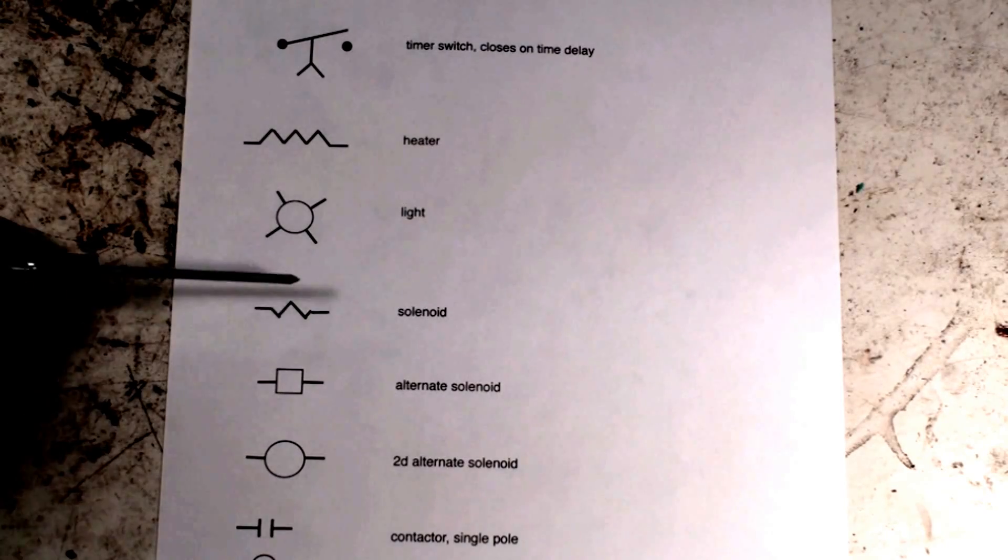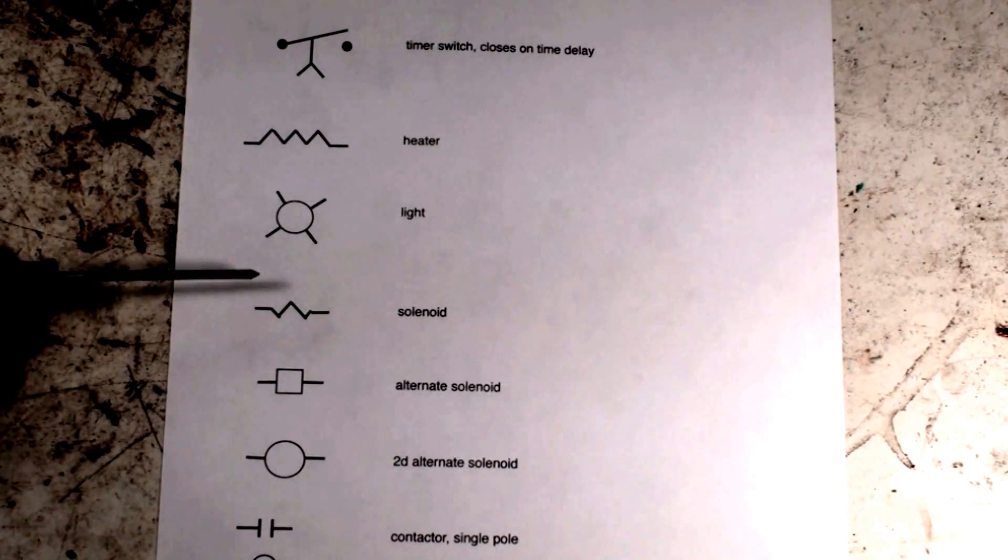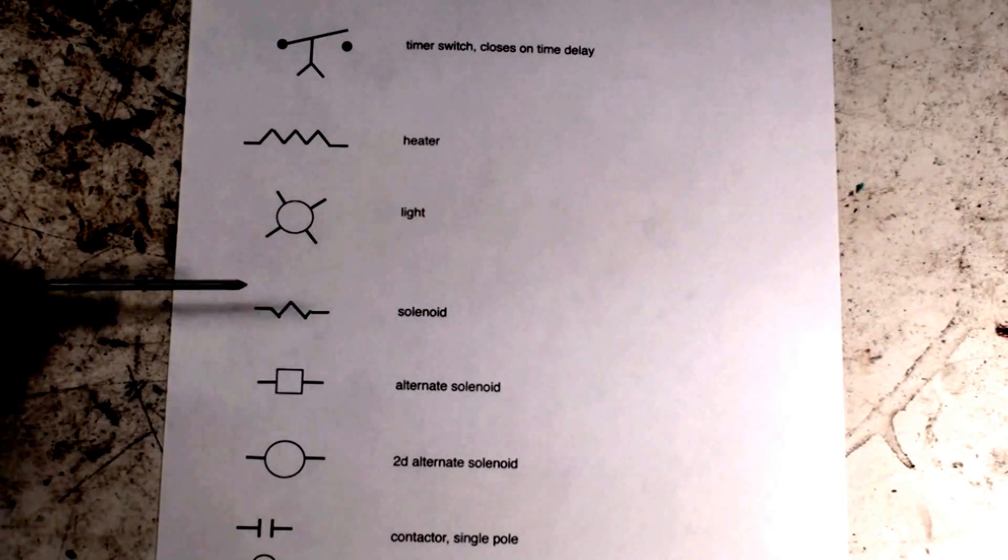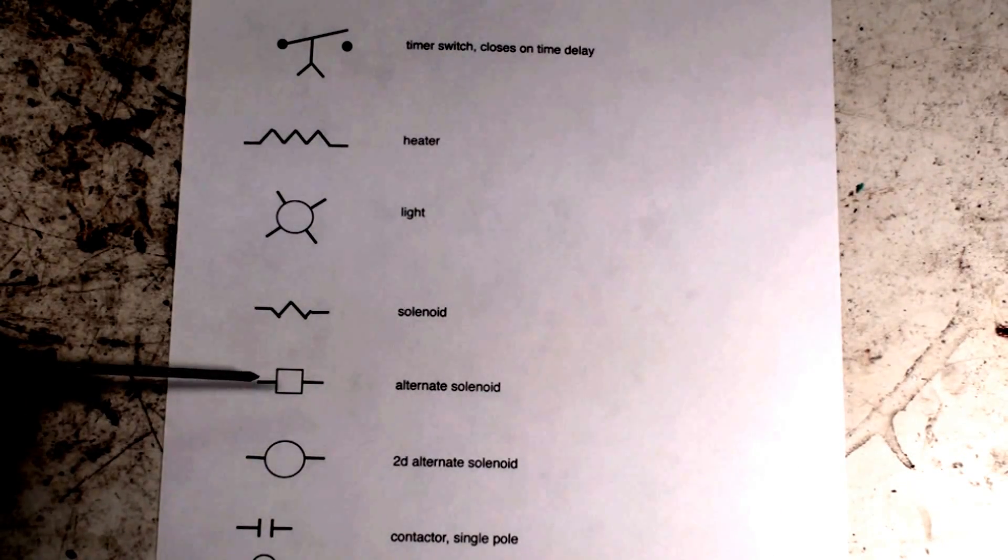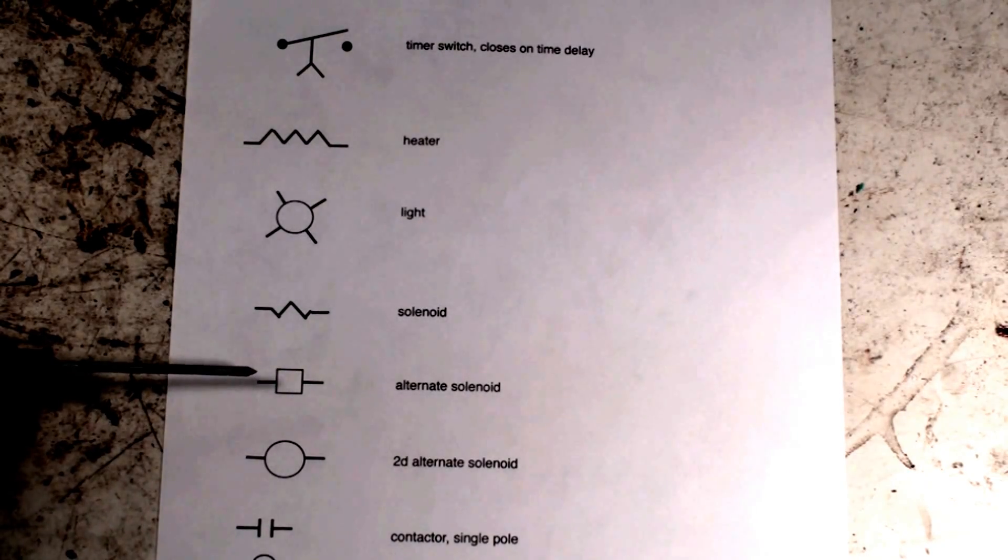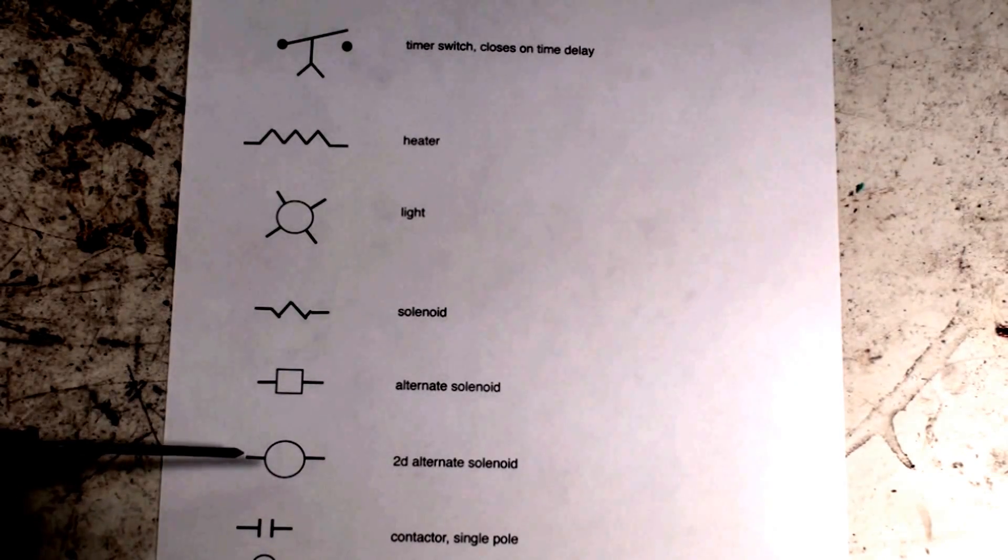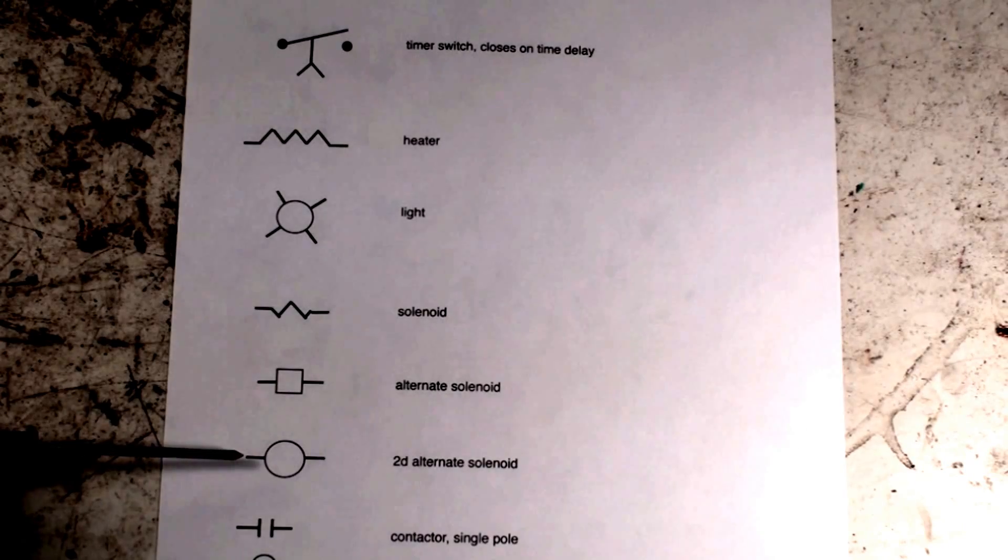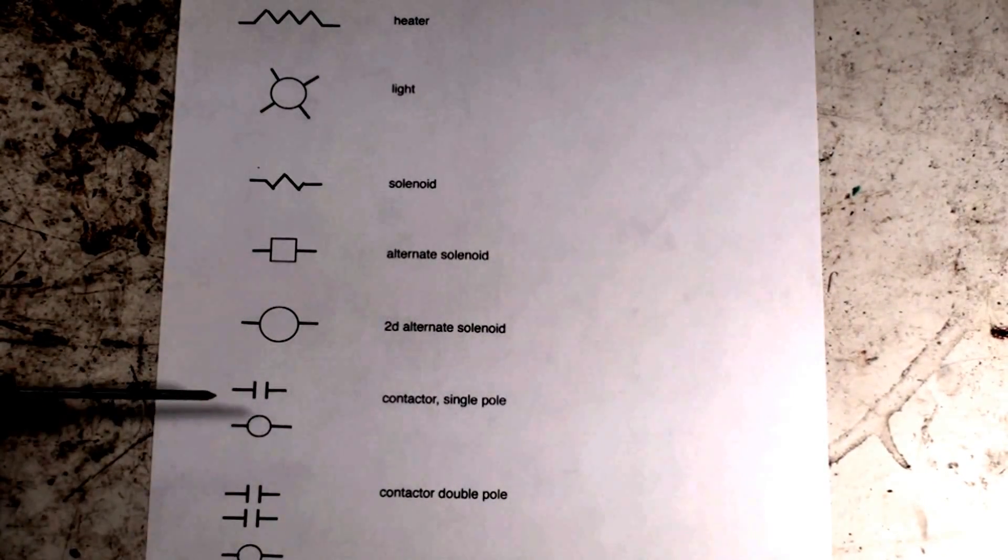A solenoid looks very much like a heater except it's shorter with just one squiggle on it, and they make these in various ways - they're not always done just this way. Here's an alternate type of solenoid - sometimes it's done just as a square box. You have to figure out what these are by their context in the diagram. Here's a second alternate solenoid with just a circle.